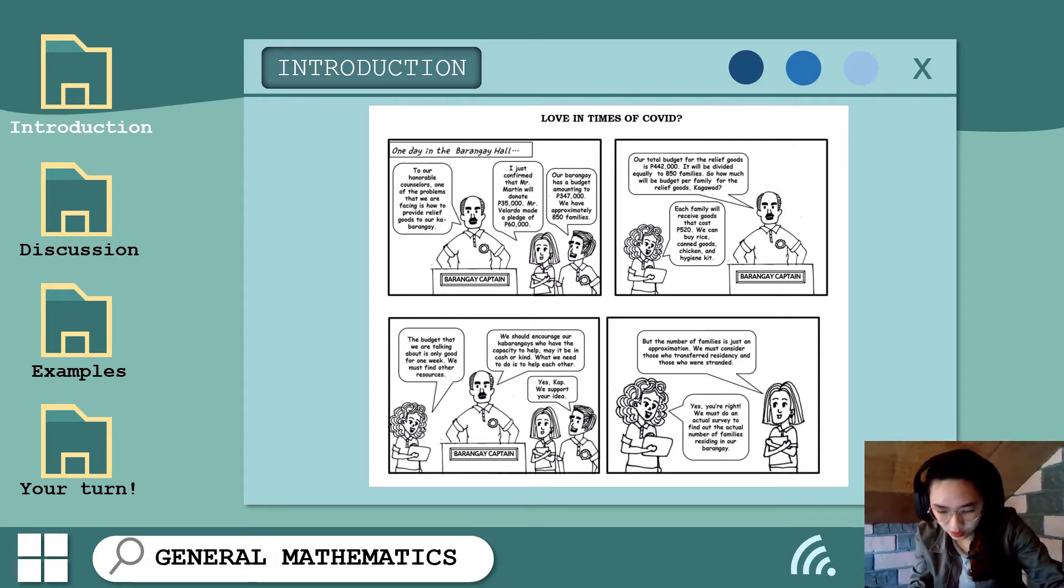So they decided to conduct an actual survey on the amount allotted per family. The amount allotted per family - kailangan lang natin kunin yung total budget ng barangay kasama yung mga pledge o yung mga sponsors pang amount, then divided by the number of families. Ngayon, hindi natin alam kung ilan nga po ba yung actual na number of families. So,